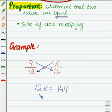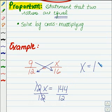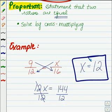If we divide both sides by 12 here, we'll get x all by itself. And on the other side, we'll have our answer. 144 divided by 12 is 12. So the value of x in this proportion is 12.